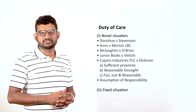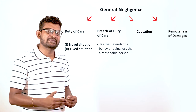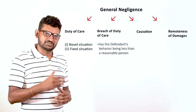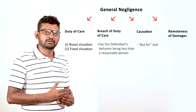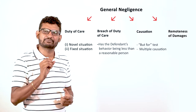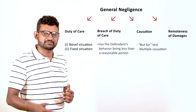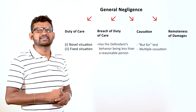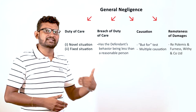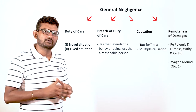For breach, has the defendant's behavior been less than that of a reasonable person? For causation, apply the but-for test, then consider multiple causation — your subject guide has an entire chapter on causation and multiple causes. For remoteness, start with Polemis and how Polemis was overruled by The Wagon Mound. That would be your flow for a general negligence question.